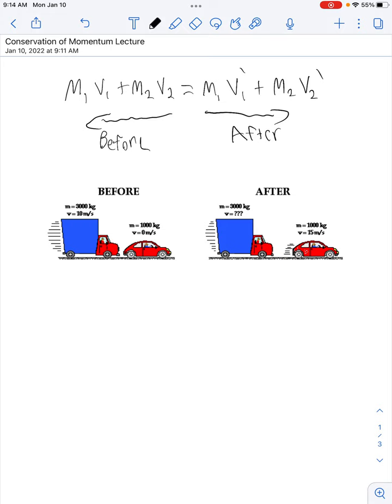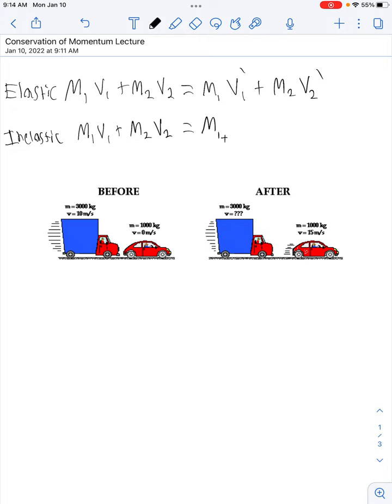Okay, there are two different types of collisions. You have elastic and inelastic collisions. This equation goes with elastic collisions. Elastic collisions are collisions that, after two objects hit, they bounce off of each other. Inelastic collisions are collisions where the objects stick together after they hit one another. So the equation that you'll use for inelastic collisions is very similar, but it looks like this.